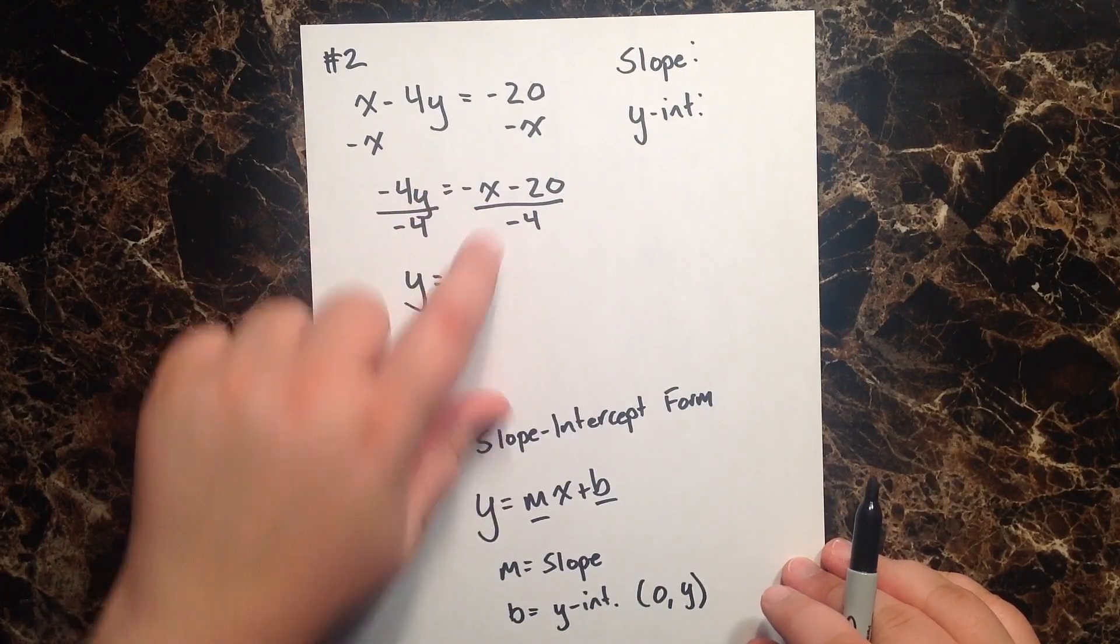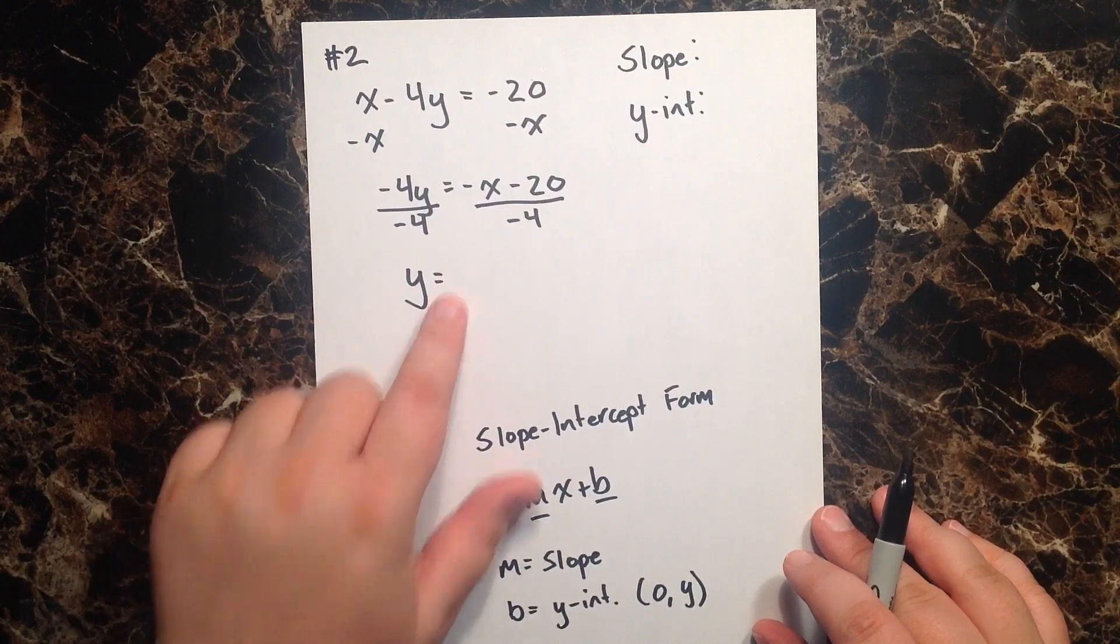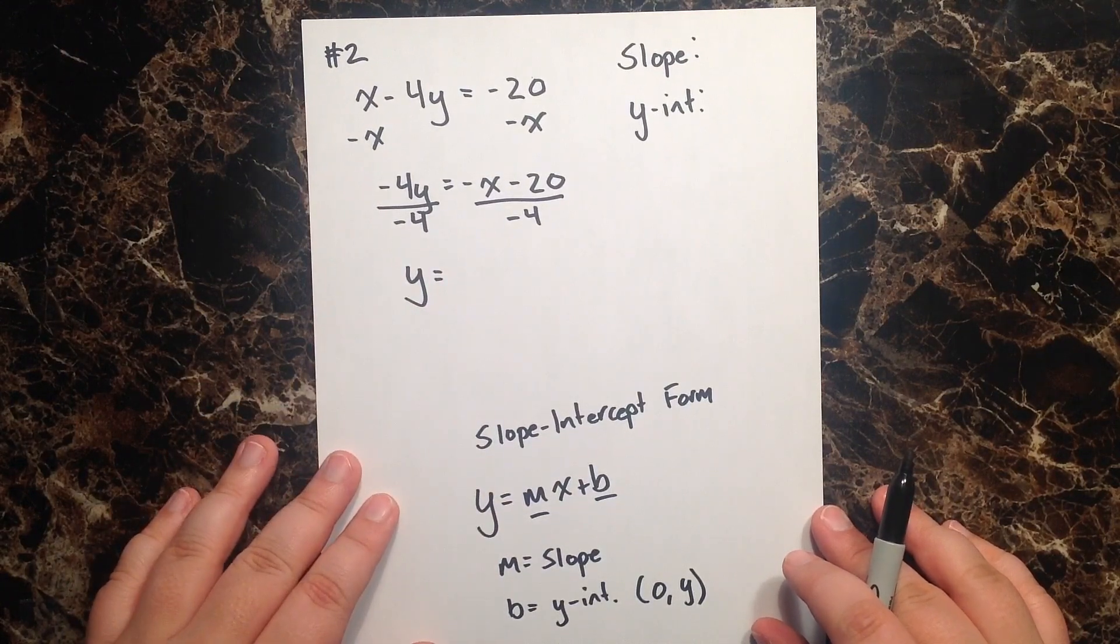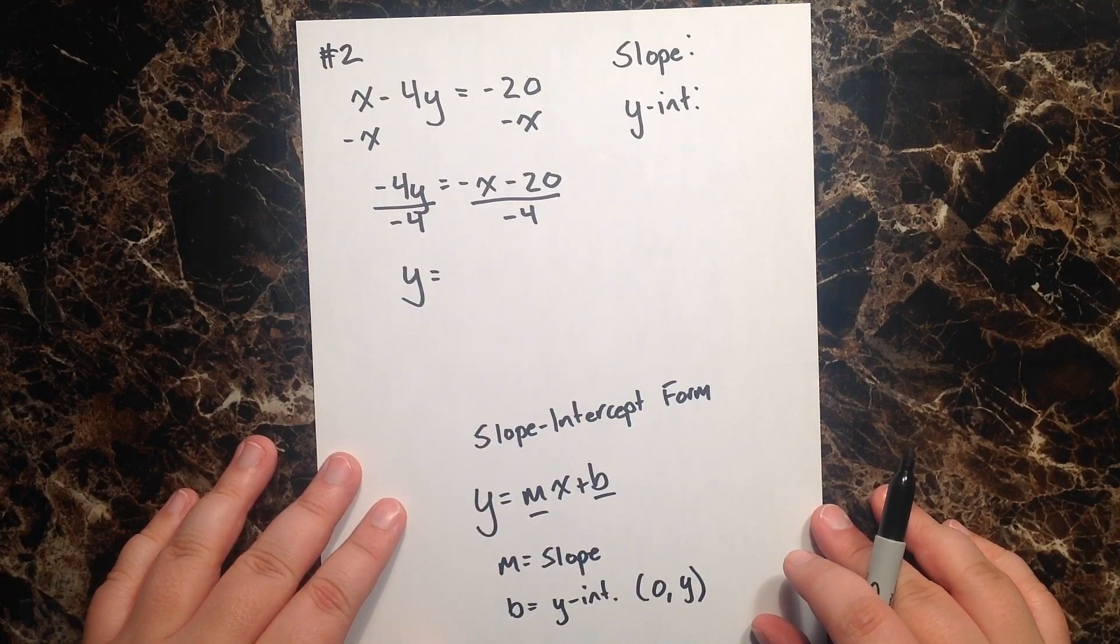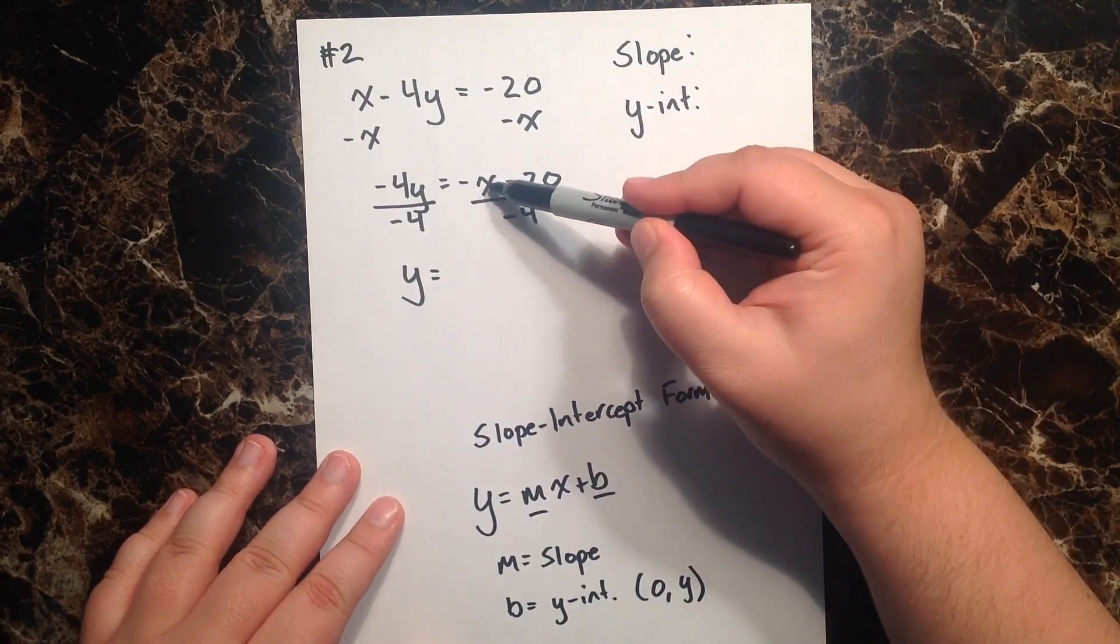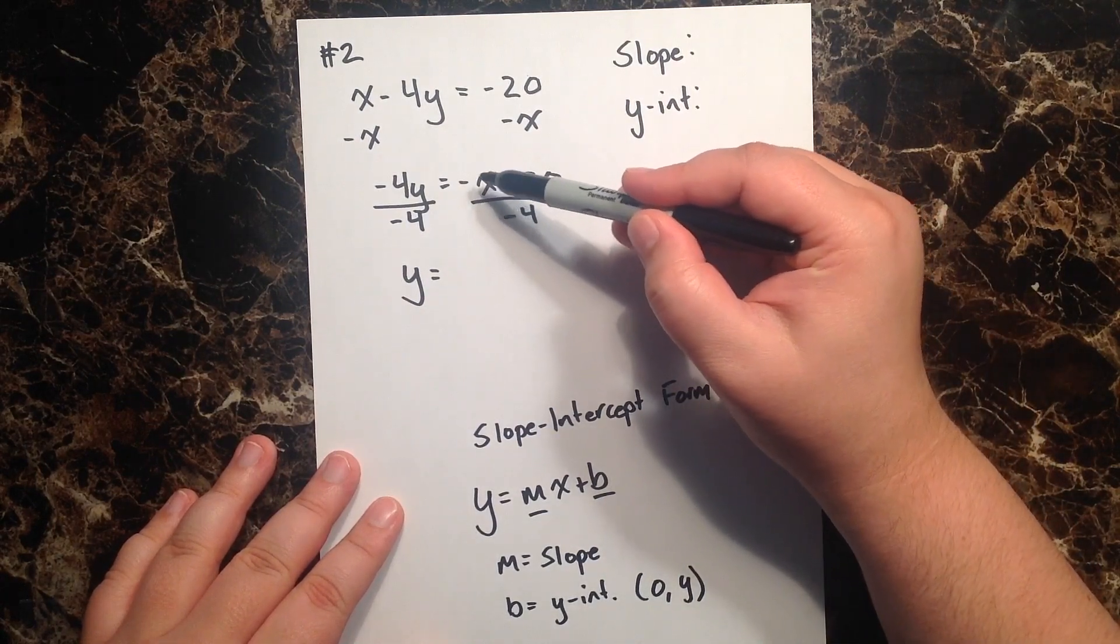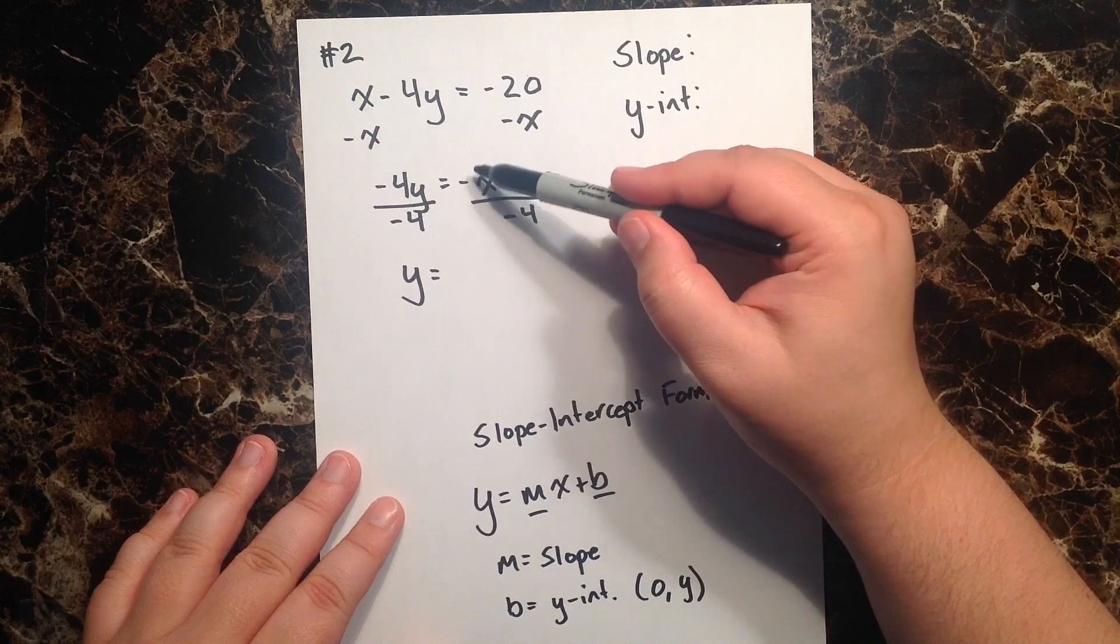well, I see I have a negative over a negative, so I know that I'm going to have a positive slope here, but we have to remember that whenever we have a variable and there is no number in front of that variable, no coefficient,